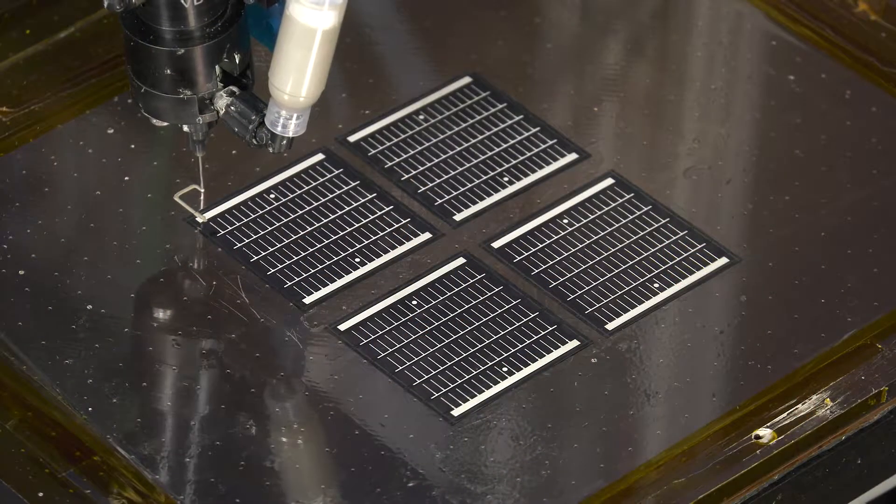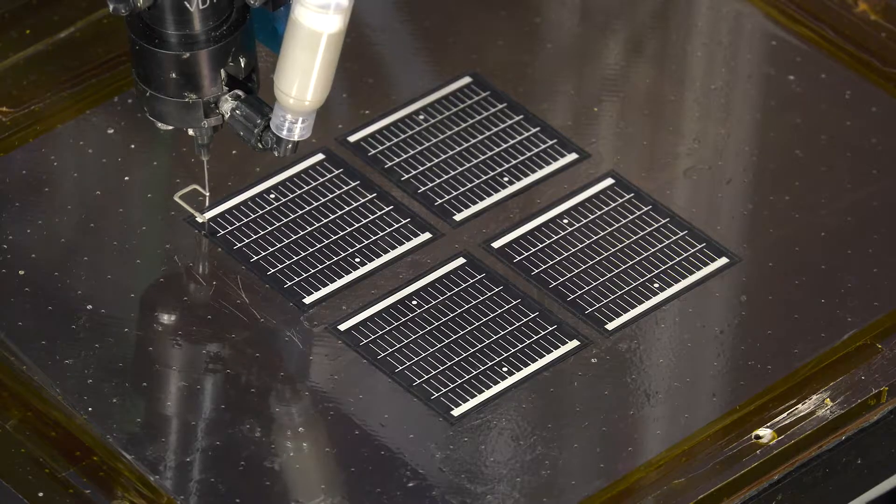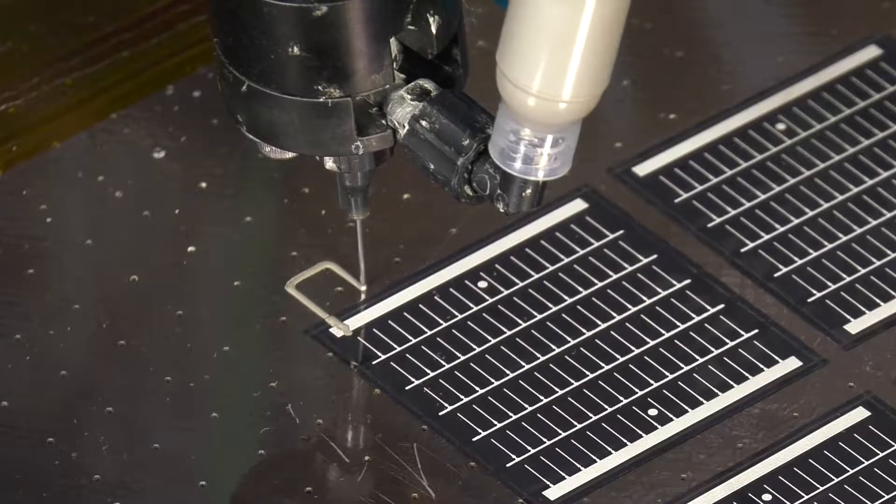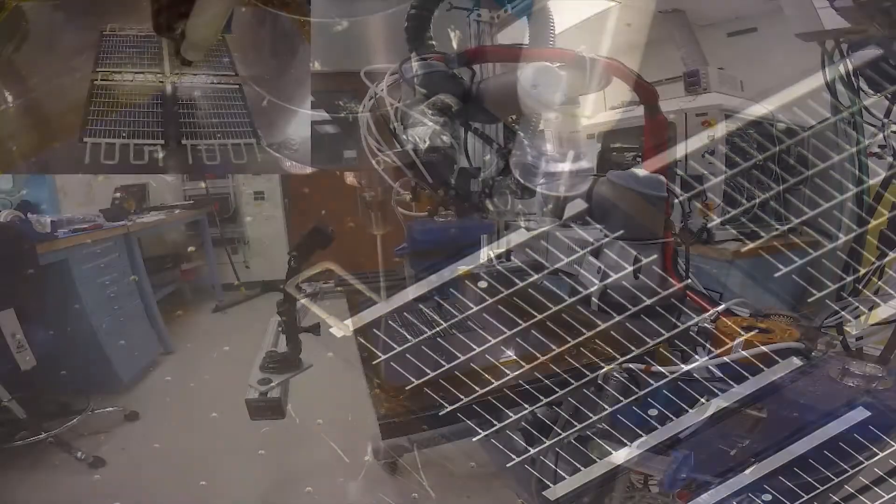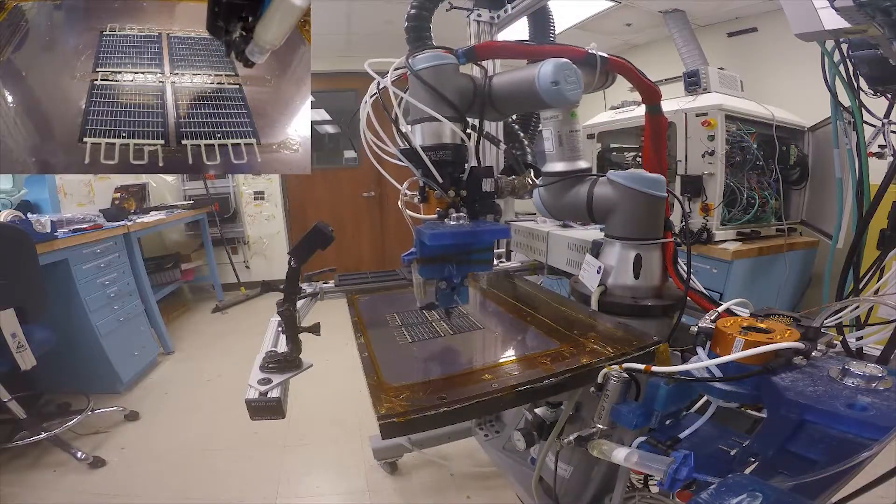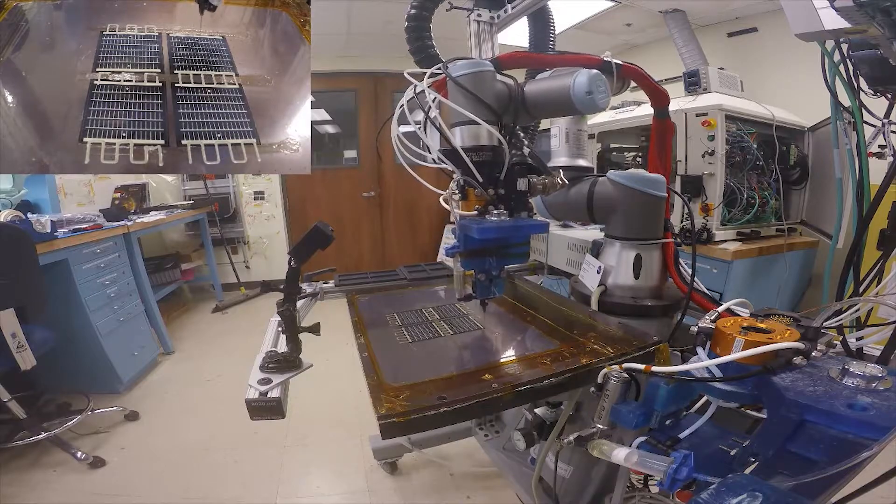What would be very powerful is if we could actually print that solar cell. Right now we're printing all the stuff around a COTS solar cell. If we could actually print that solar cell itself, then we have a fully printed solar panel